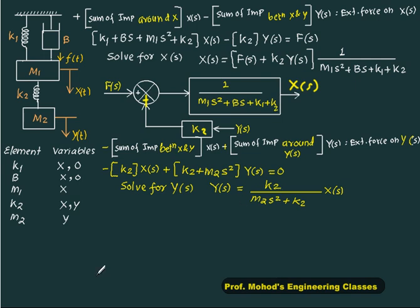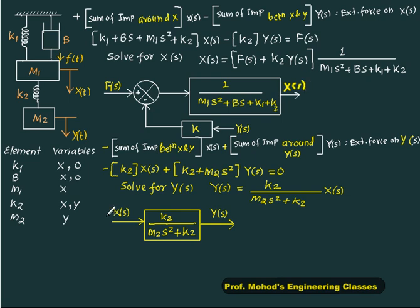So we can write this in again a block. So if I write x of s as input, then we have to write down k2 upon m2 s square plus k2. Now observe these two blocks. Here output is x of s, whereas the input of this one is x of s. Our system input is f of s, so f of s, then output is x of s, then x of s, second output and final output is y of s. So I will connect this block here that will complete my block diagram, this given diagram into the block diagram.